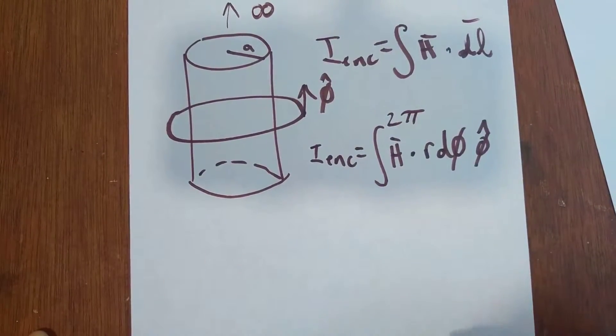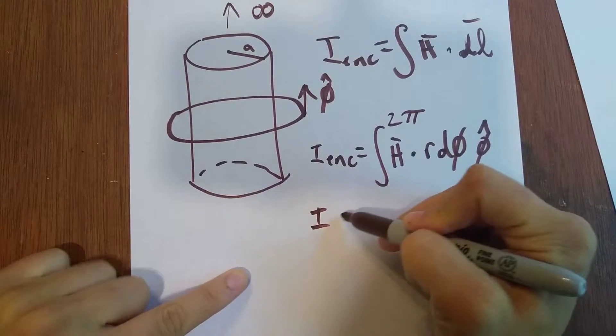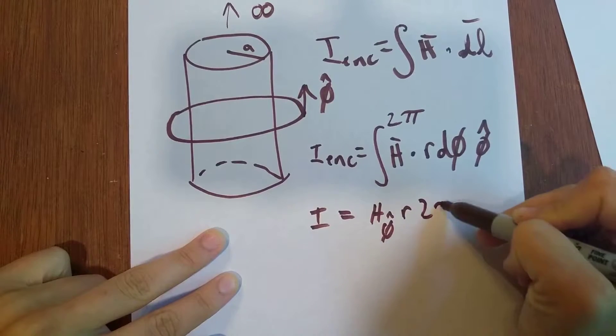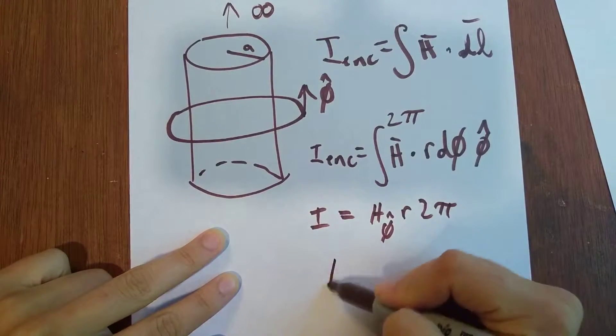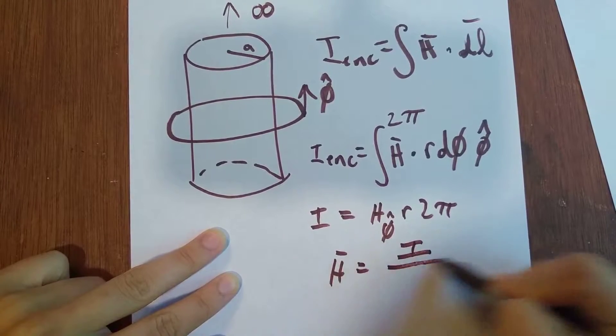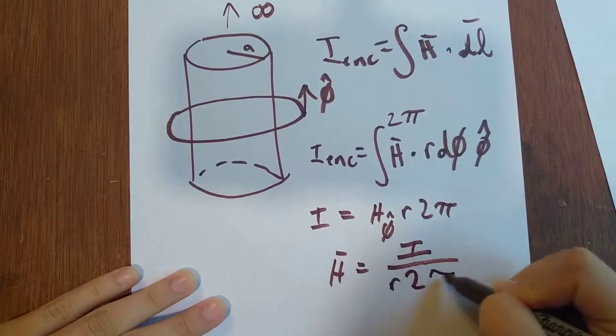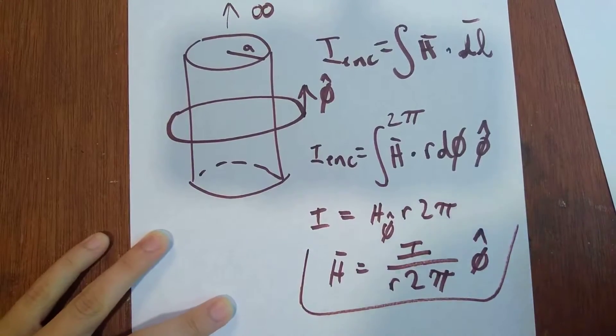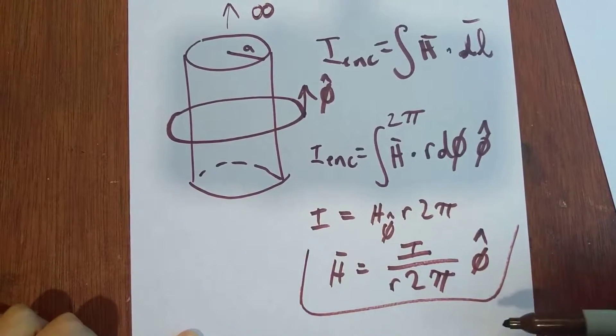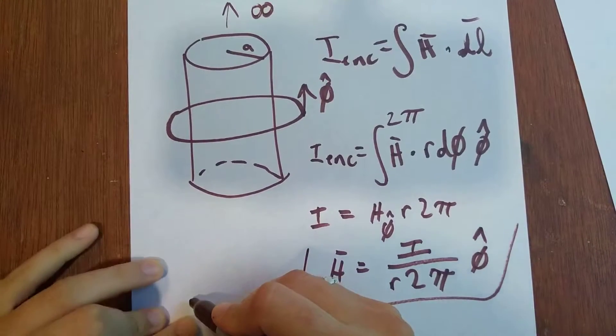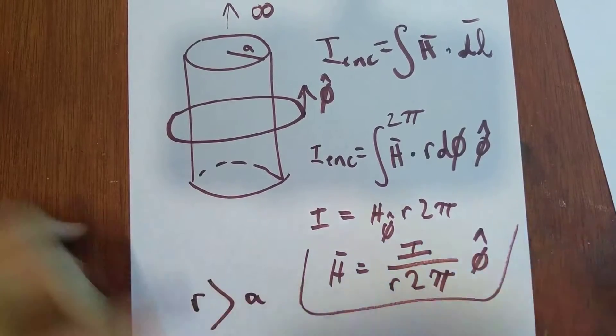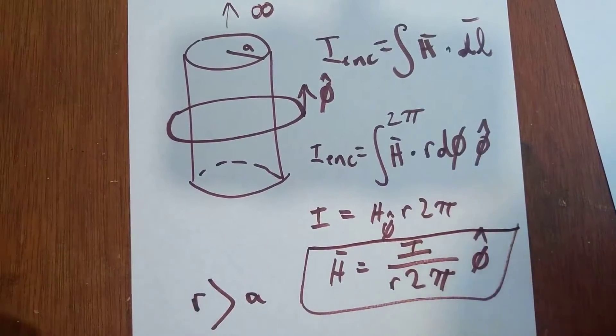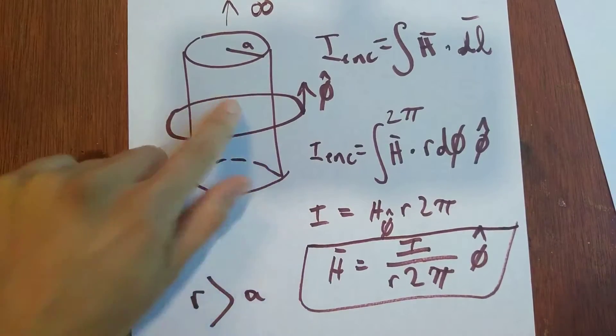Okay, and then we're going to solve for H. Alright, and this is our value for H. But wait, this is only true where R is greater than the radius of the cylinder. So this is part of our answer, but we also have to figure out what is H inside of the cylinder.